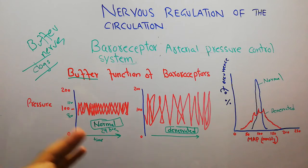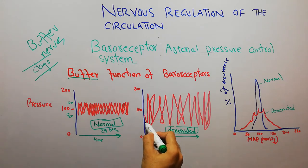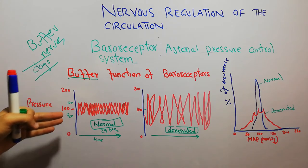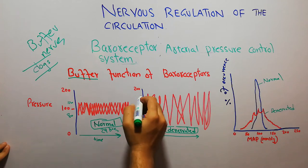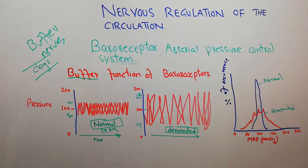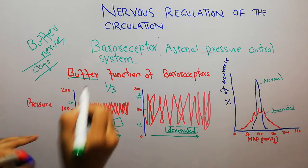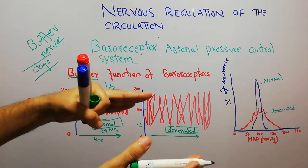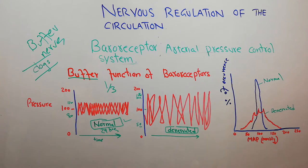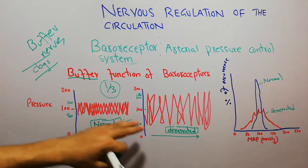Now this dog is denervated — the baroreceptors are removed from the aortic arch and the bifurcation of the carotids. You can see that the mean arterial pressure is deviating quite frequently from 100 mmHg. It can come to around 50 mmHg and it can go to around 180 mmHg. The same dog with normal baroreceptors versus when denervated shows a lot of difference — around one third of the variation in mean arterial pressure can be reduced if the baroreceptors are intact.